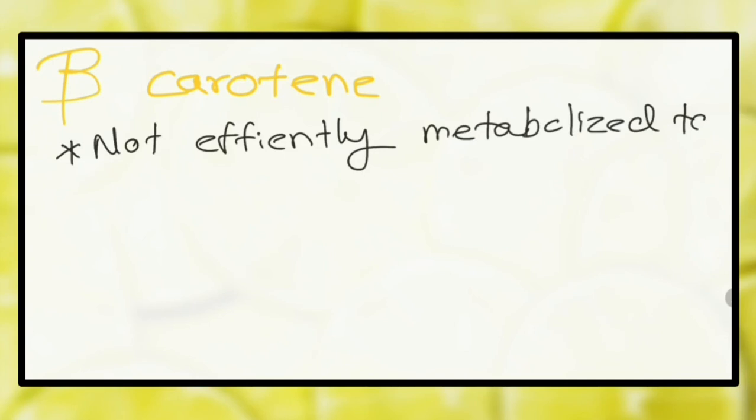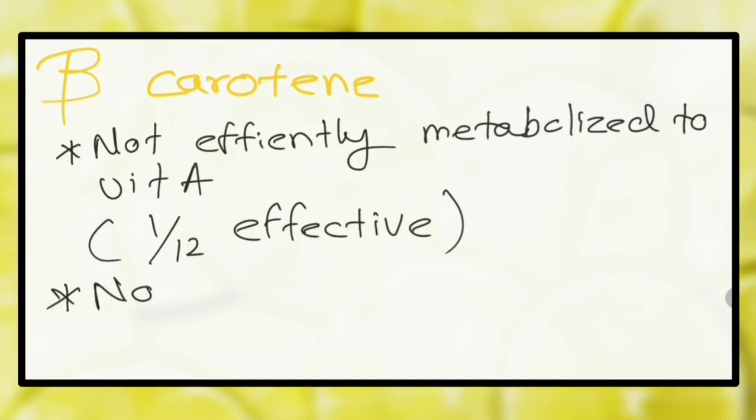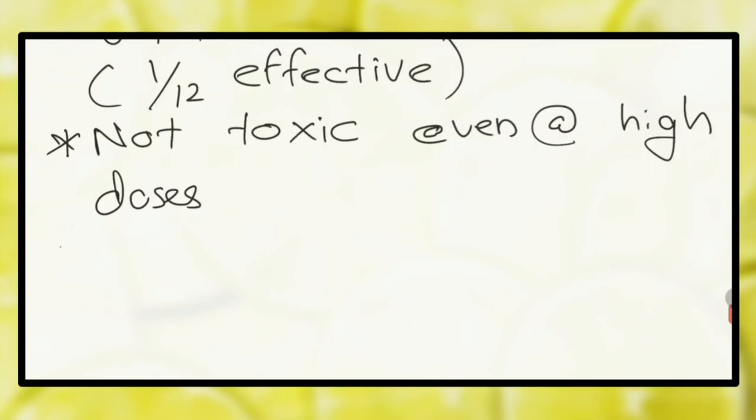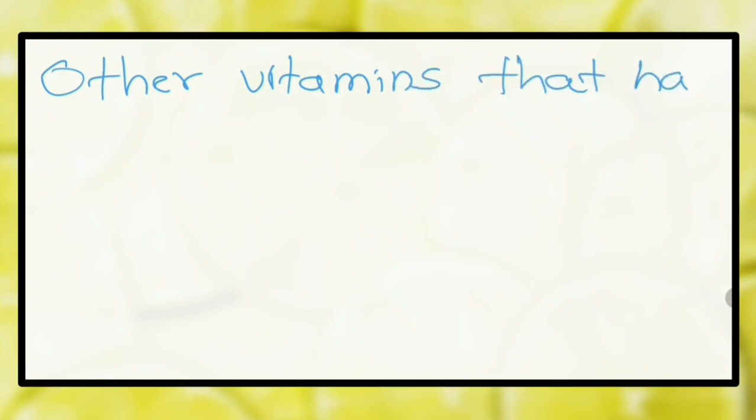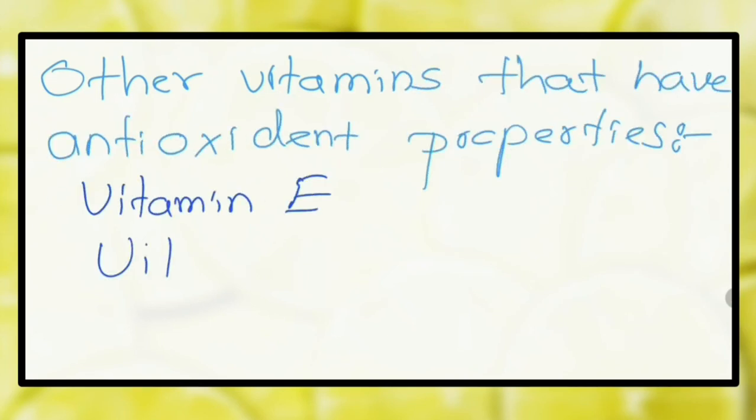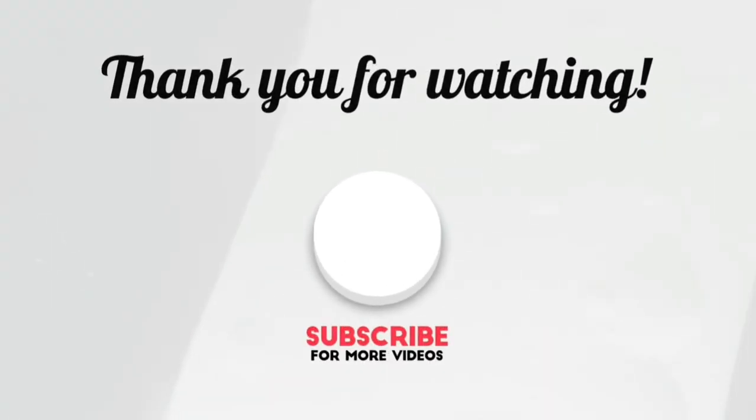What are the differences of beta carotene when compared to other dietary sources of vitamin A? It is not efficiently metabolized to vitamin A. It is not toxic even when consumed in higher doses for longer periods. Also, it has antioxidant properties. What are the other vitamins that have antioxidant properties? Vitamin E and vitamin C. Thank you.